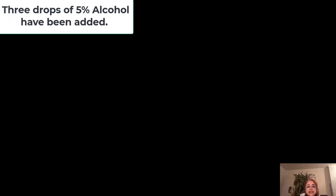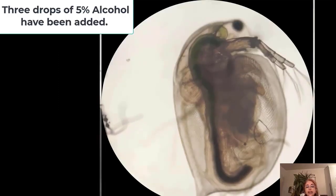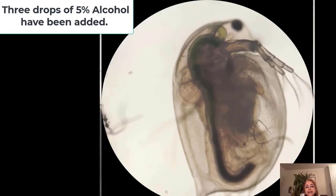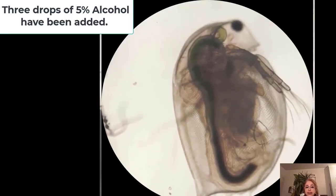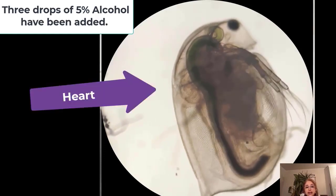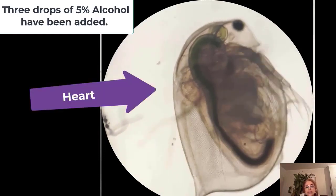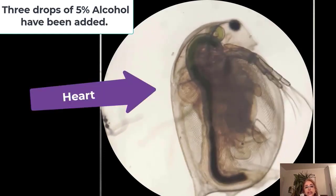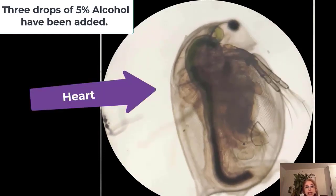3 drops of 5% alcohol have been added to the Daphnia. Start counting the heartbeats once you hear the beep sound.